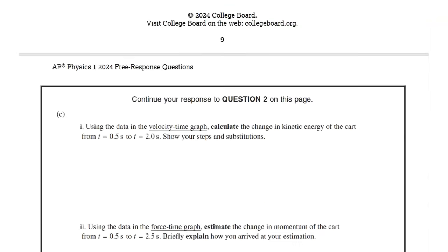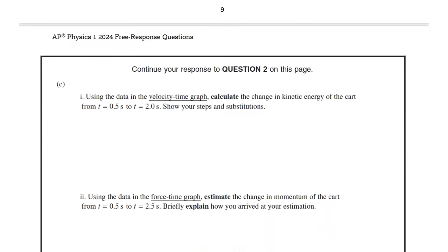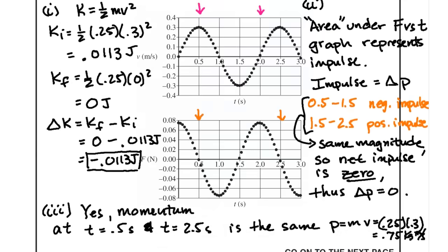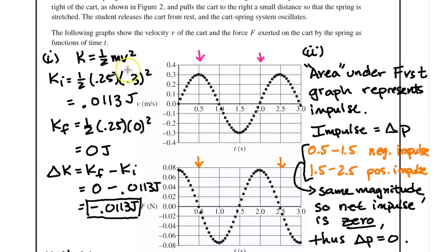So now we're going to go to our first question. First question states that, using the data in the velocity time graph, calculate the change in kinetic energy of the cart from 0.5 seconds to 2 seconds. Show your steps and substitution. So the equation we're using for kinetic energy is ½mv². And we're calculating at 0.5 seconds and at 2 seconds. At 0.5 seconds, the speed is 0.3 and we calculate the initial kinetic energy is 0.0113 joules. At 2 seconds, the speed is 0.0, so the kinetic energy is 0. We're asked to find the change in kinetic energy. When you're solving for the change, it's always the final minus initial. So it's 0 minus 0.0113 joules and we get a negative 0.0113 joules.